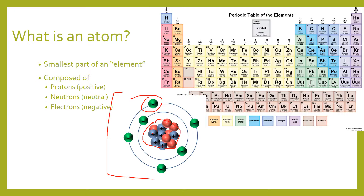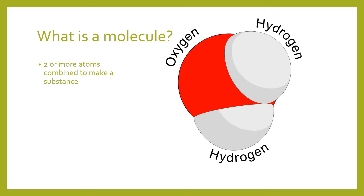We have six protons, and if we go to our periodic table we can see that carbon has an atomic number of six. This atom does not have a charge because we have six electrons and six protons, so they cancel out to a neutral atom.